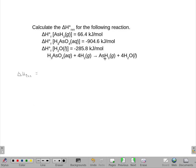So in this case, I have an arsenic trihydride and just one of them, so I'll have 1 times the 66.4 kilojoules. And there are four waters, so four times the negative 285.8 kilojoules per mole. And that's all of my products.